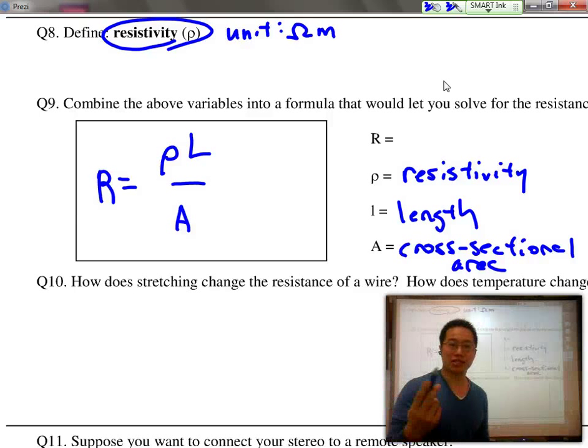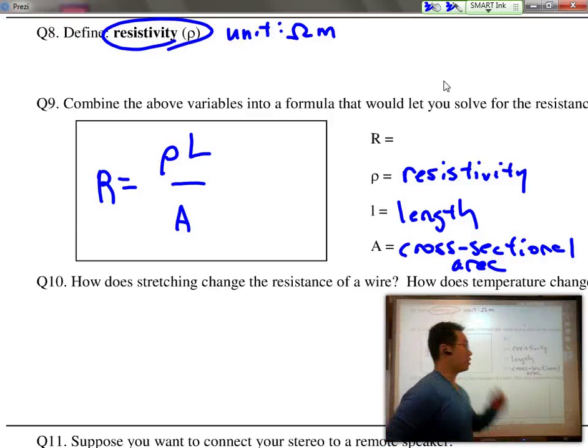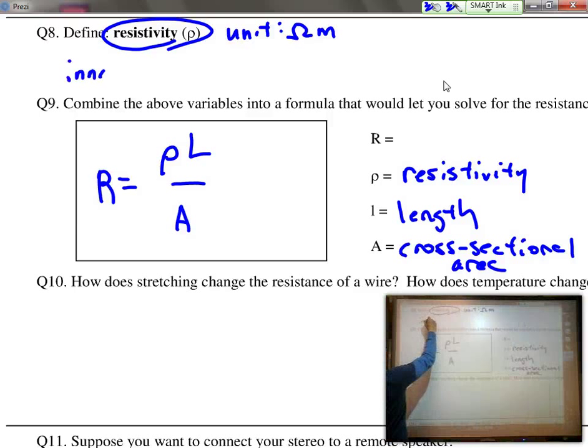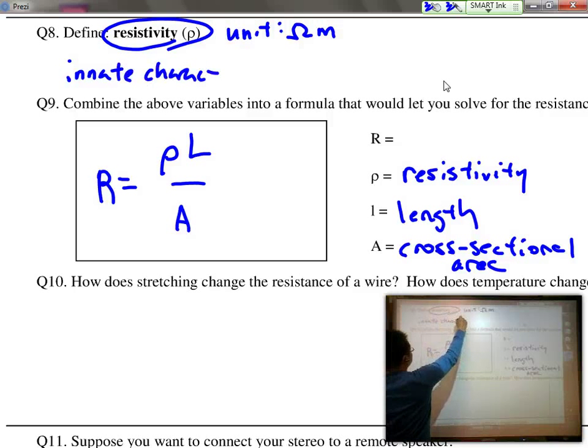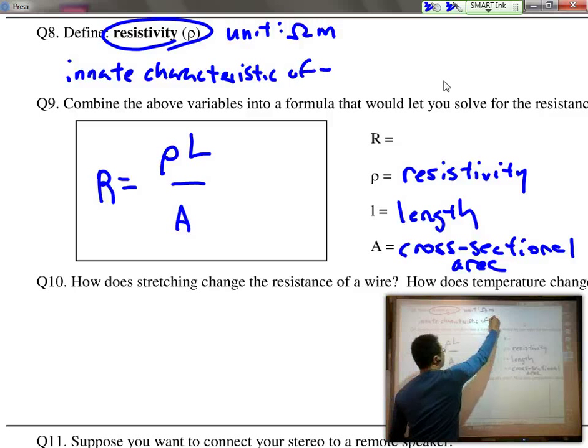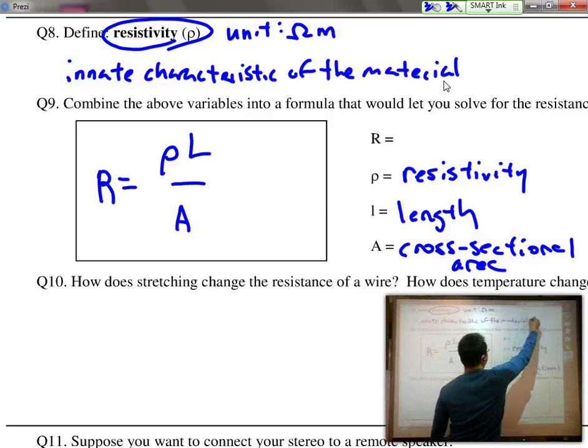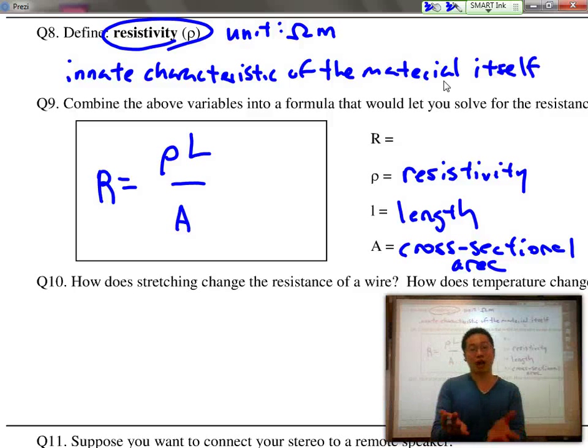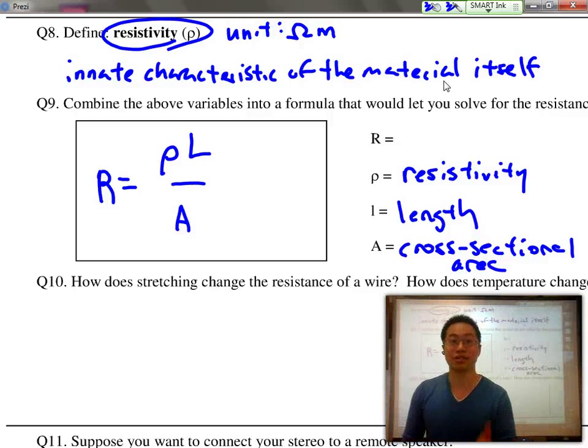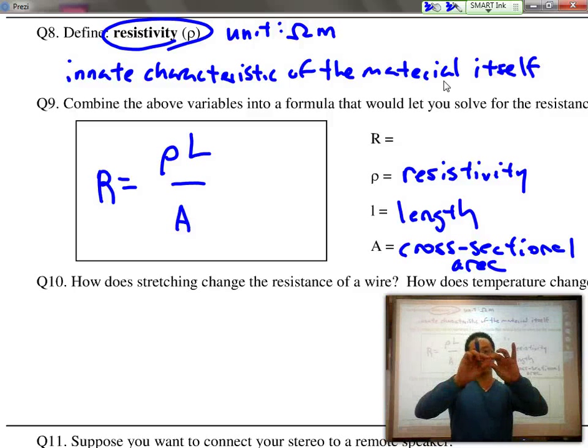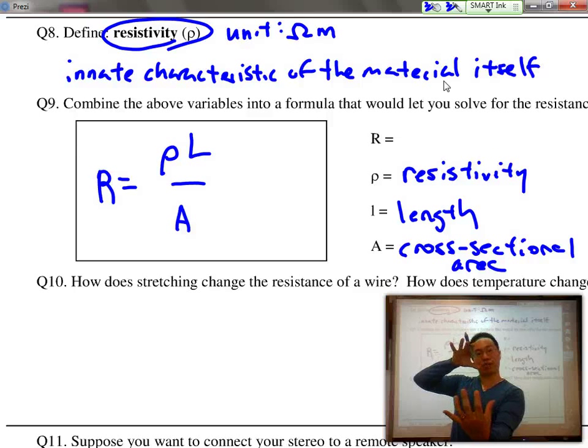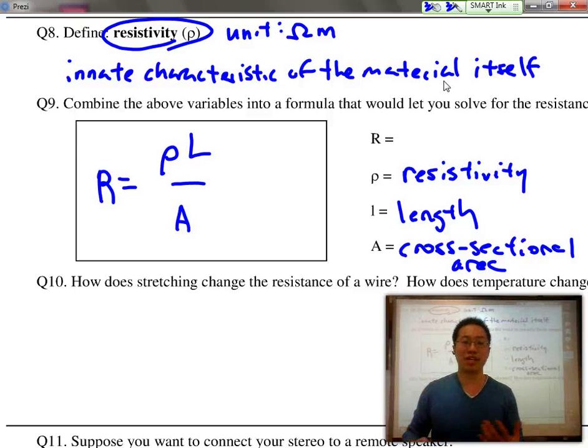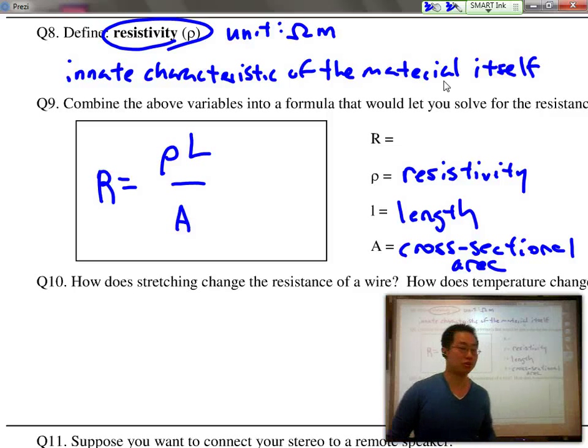Notice that it is the same exact symbol that we use for density. That's because resistivity is also, just like density, an innate characteristic of the material itself. Just like with density, it doesn't matter how much copper you have, whether it is a huge amount or a small amount, density of the copper will always stay the same. So same thing with copper wire. No matter how long or how thick the copper wire might be, it has some sort of innate characteristic called resistivity that determines how much resistance that wire is going to produce.